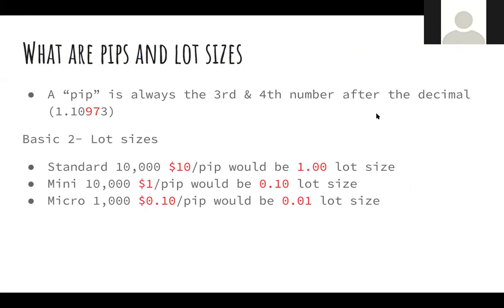What are pips and lot sizes? This is covered in the basics videos — if you're on this call, you must have watched all of them, because I will not be covering anything already in those videos. A pip is usually the third and fourth number after the decimal. I'm going to show y'all how to calculate pips today. If you are trading and you want to make $10 per pip, you would be trading at a 1.00 lot size. It is not wise to trade at this lot size with a small account — you probably need at least $10,000 for that.